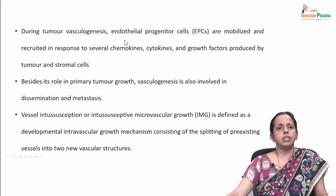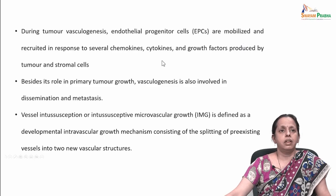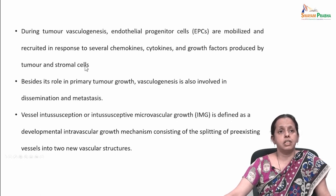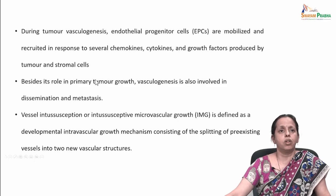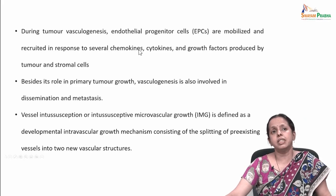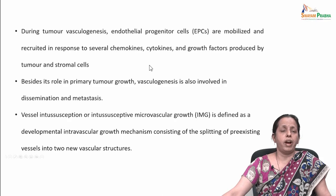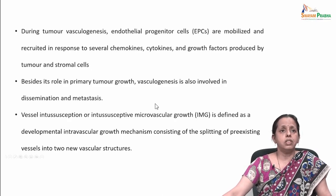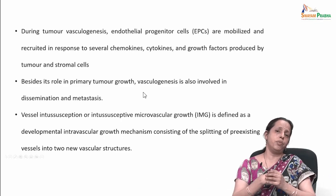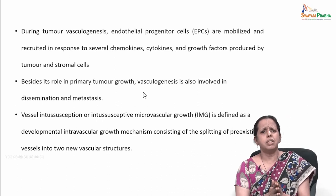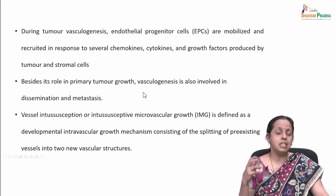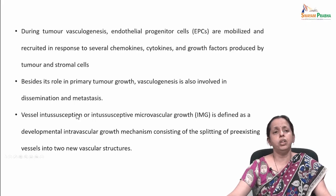During tumor vasculogenesis, endothelial progenitor cells are mobilized and recruited in response to several chemokines, cytokines, and growth factors produced by the tumor and stromal cells. In normal cases, stromal cells will not produce these growth factors or cytokines, but upon stimulus from tumor cells, the stromal cells in turn secrete growth factors which induce angiogenesis. Vasculogenesis is important not only for supplying nutrients and oxygen to primary tumor growth, but also for distant metastasis and dissemination of the tumor cell mass.